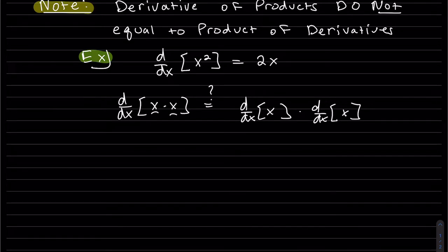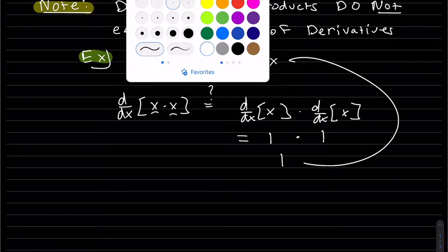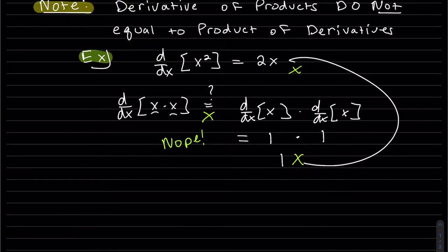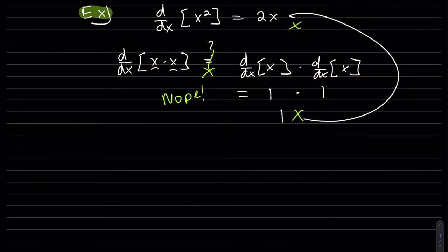Well, what's the derivative of x? That's 1. And what's the derivative of x? And they are not the same. Nope. It's not equal. So what does it equal to? Well, we're going to call this the product rule.